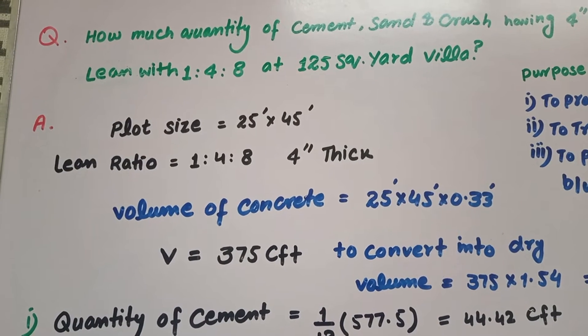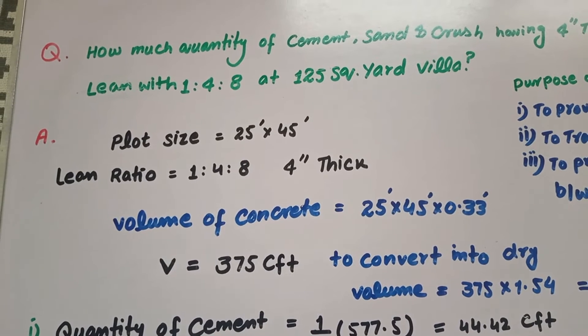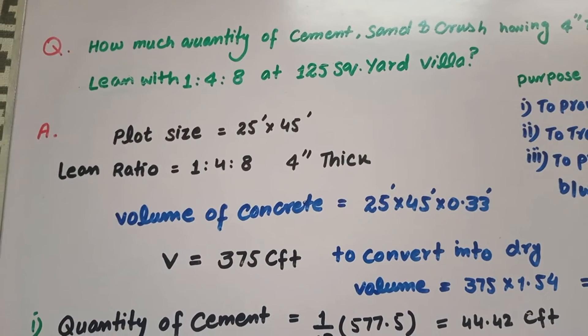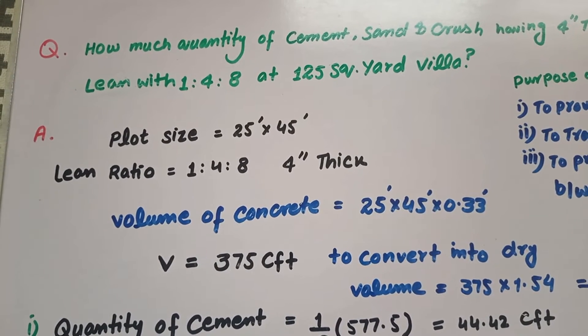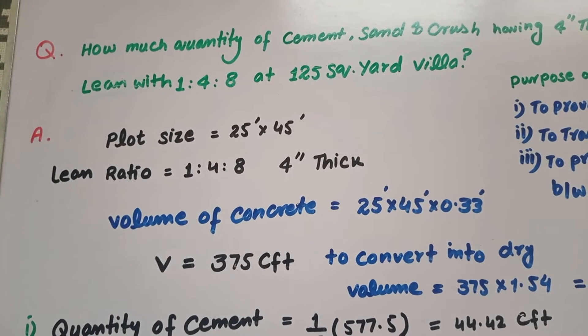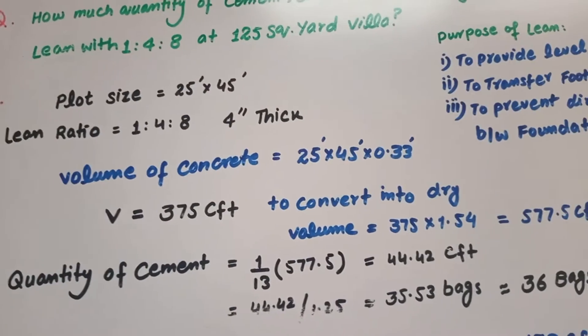We calculate the volume of concrete having width 25 feet, length 45 feet, and thickness 0.33 feet. So volume of wet concrete is equal to 375 cubic feet. To convert wet volume into dry volume, multiply by 1.54 and calculate the answer: 577.5 cubic feet.